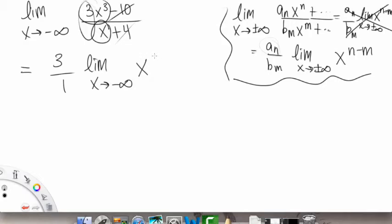It's like x³ over x. So that would be 3 minus 1, right? And then we get 3 times the limit as x goes to negative infinity of x².